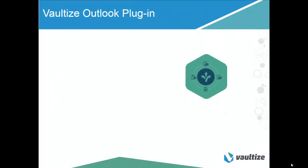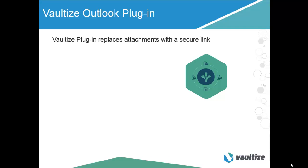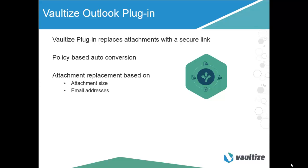The Vaultize Outlook plugin replaces email attachments with secure links, freeing up email storage in mailboxes, PSTs, and on the email server itself, including network bandwidth. All shared files are securely stored only once in Vaultize and a link is automatically inserted into the email. Corporate IT can set policies for automatic conversion of attachments to secure links. Key features include converting attachments into secure links so that even large attachments can be added quickly because of Vaultize's global deduplication capabilities. Policy-based auto-conversion improves security, network usage, and storage utilization. Attachment replacement policies can be based on size of attachments, sender, or recipients of the email.